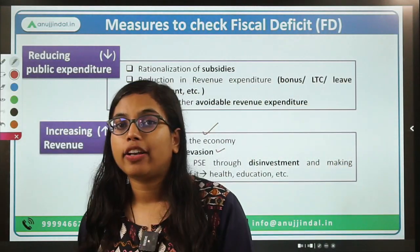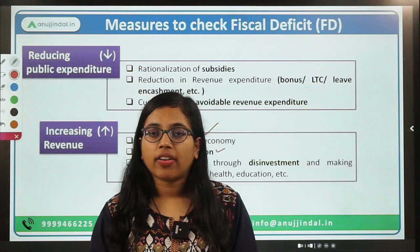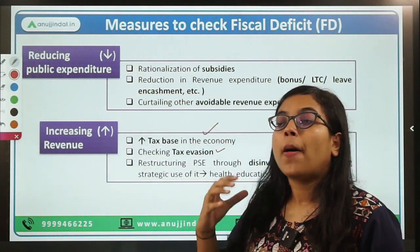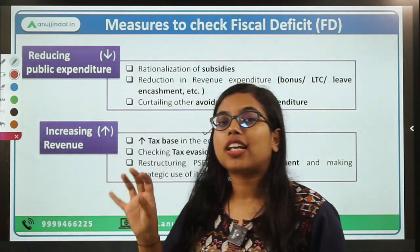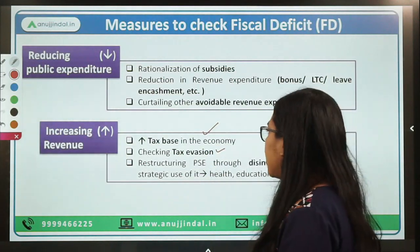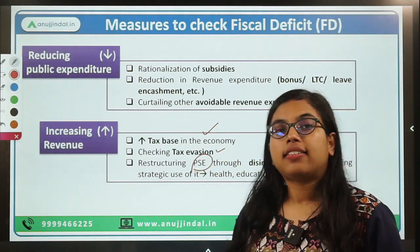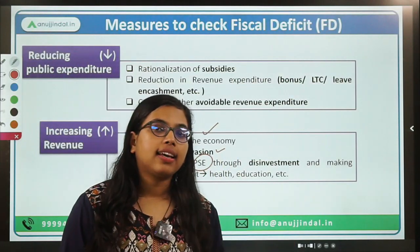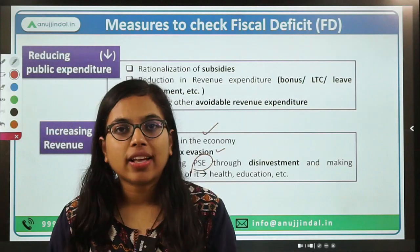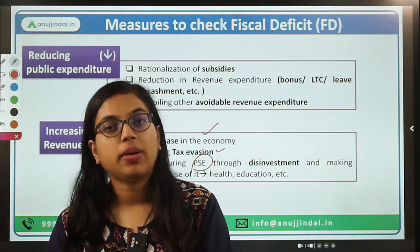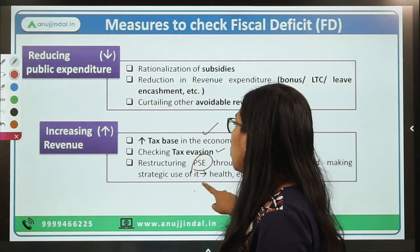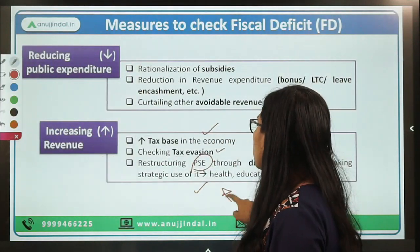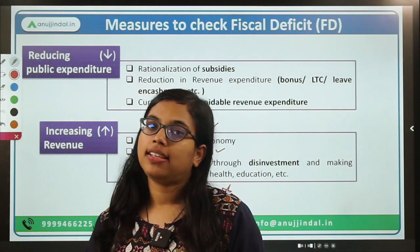Second is checking on any kind of tax evasion. A lot of people evade taxes by showing higher losses. We need to come up with certain measures so that such tax erosion is not done in the economy. Third is restructuring the public sector enterprises. The PSEs should disinvest by reselling shares, and the government can use such funds from disinvestment in strategic ways — for example, making use of such funds to provide better health facilities or better education.